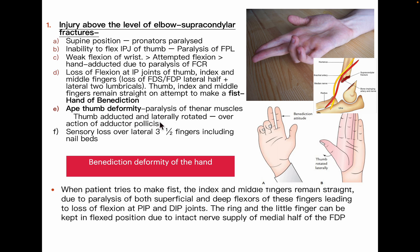Ape thumb deformity occurs due to paralysis of thenar muscles supplied by the median nerve. Since adductor pollicis, supplied by the deep branch of the ulnar nerve, is still working, the thumb is adducted and laterally rotated. There is also sensory loss over the lateral three and a half fingers including the nail beds. In benediction deformity, when the patient tries to make a fist, the index and middle fingers remain straight due to paralysis of both superficial and deep flexors. The ring and little fingers can still flex because the medial half of flexor digitorum profundus is intact, supplied by the ulnar nerve.